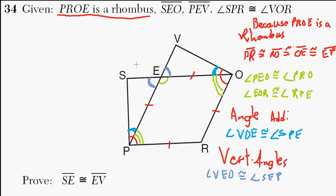I can now make a statement using angle side angle. So, due to angle side angle, I can say the following. I can say that triangle ESP is congruent to EVO. Triangle EVO.